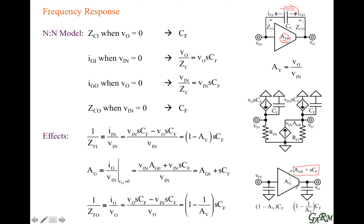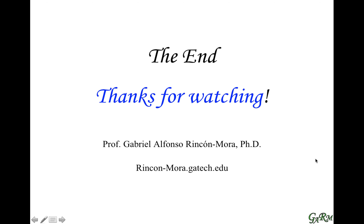This feed-forward zero is in-phase when the gain is non-inverting because there's no phase inversion. But when the gain is inverting — when the transconductance is inverting — this zero is an out-of-phase zero, which is a right-half-plane zero. To summarize: this feedback capacitor can either increase the equivalent input capacitance or cancel it; it can have no effect on the output capacitance or cancel it as well; and it produces the effect of a feed-forward zero that is either in-phase or out-of-phase depending on the polarity of the amplifier.